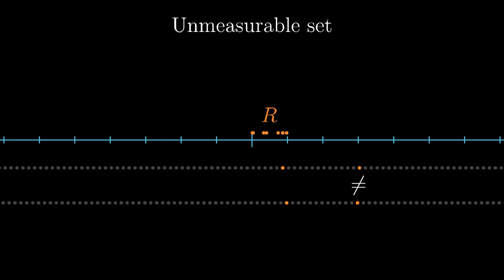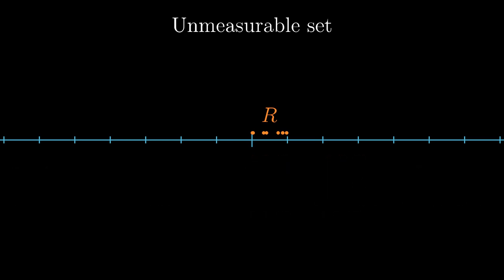There is also another way to look at it. Whenever we take two copies of r and shift both by different rational numbers, the two copies must end up being disjoint. Simply because no number from the first copy can hit any number from the other copy.